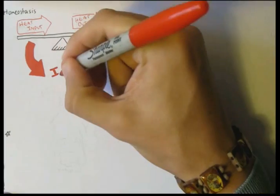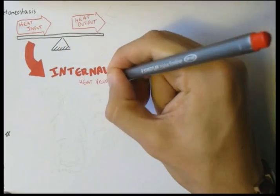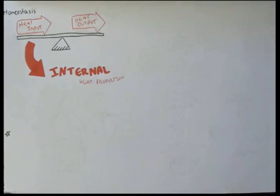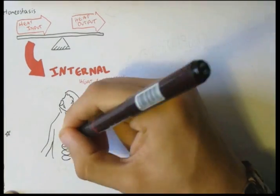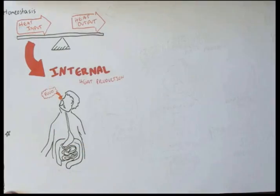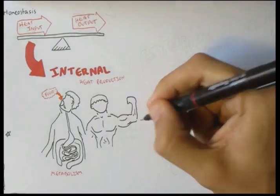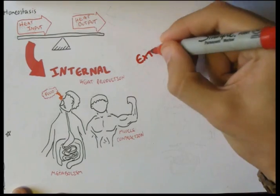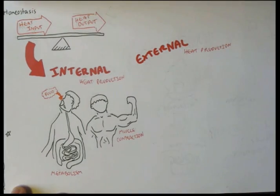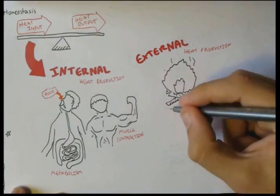Heat input can come from two ways. One way is heat produced inside the body, internally. Examples of increased heat include after you eat, the metabolic process, and also when you contract your muscles. The second way of heat input is from the outside, externally. Some examples can be from conduction or radiation.